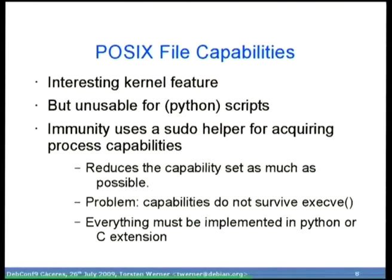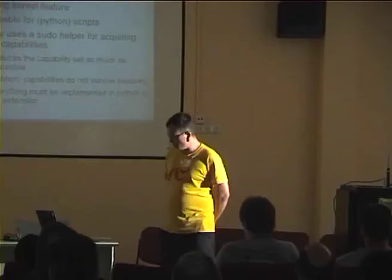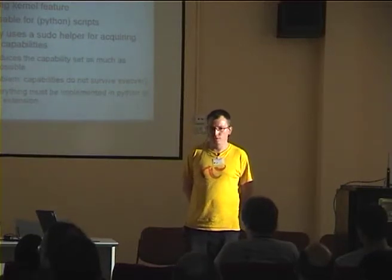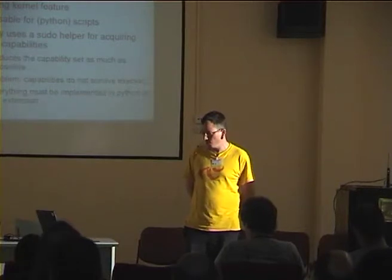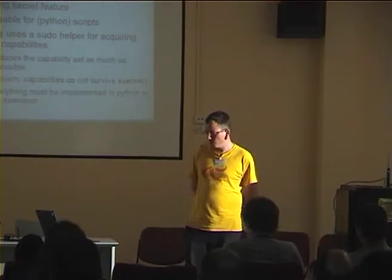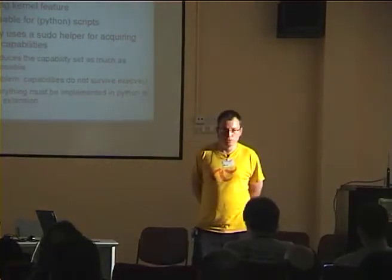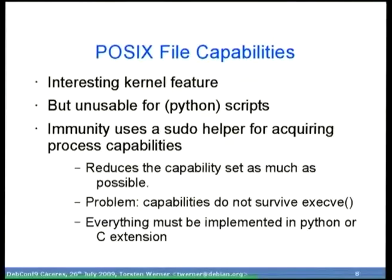I'm using a lot of POSIX capabilities to set up the container. New Linux kernels provide a feature called POSIX file capabilities, which lets you give certain binaries certain capabilities during startup. Unfortunately the feature does not work for scripts, especially not for Python scripts, so it's unusable for Python scripts and I couldn't use that feature. It did work in the 2.6.24 kernel — the first kernel that introduced POSIX file capabilities — but it definitely does not work anymore in the Lenny kernel or any newer kernels. That's why the immunity tool uses a sudo helper to get capabilities.